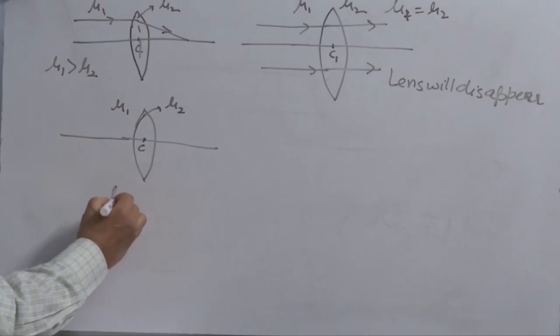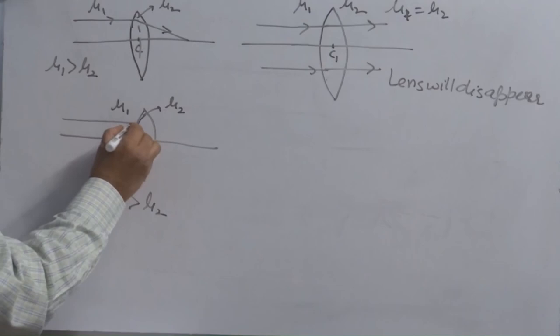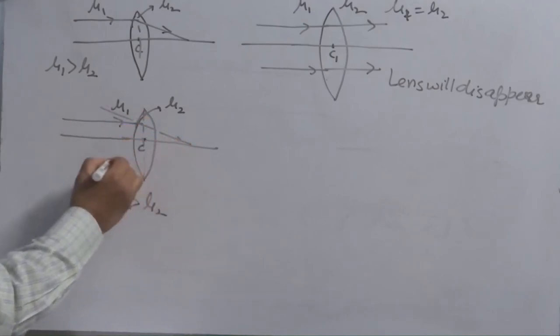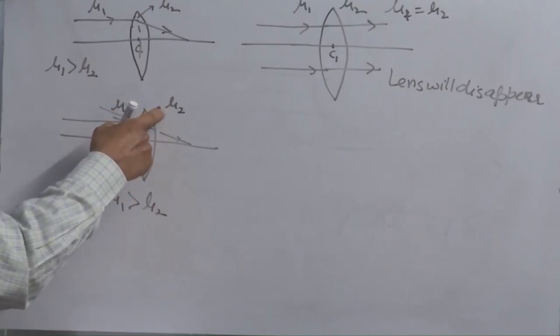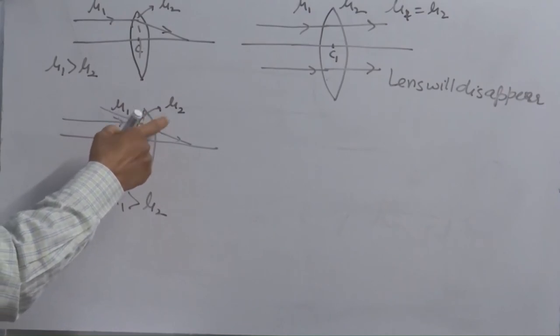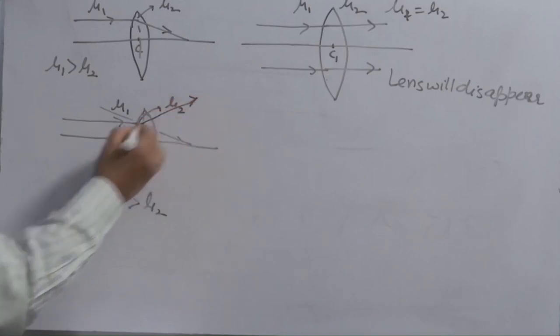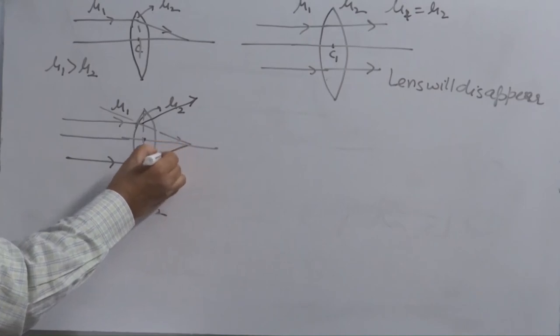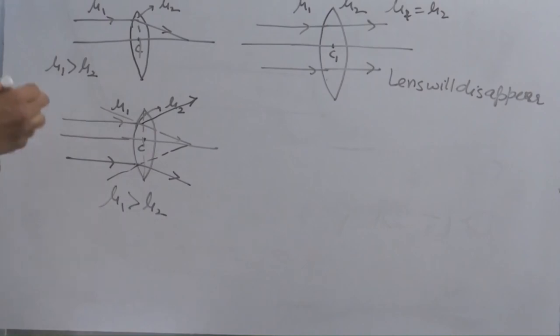Mu 1 is greater than mu 2. The ray of light coming parallel to the principal axis when it hits to this surface drops normal. Refractive index of this medium is less. So when ray of light travels from rarer to denser, it bends away from the normal. So the ray of light will move like this. Again, you drop a perpendicular on this surface. The ray of light will bend like this. So you see the quick change in the nature of convex lens.